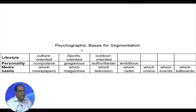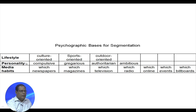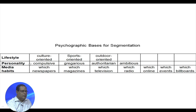We come to the psychographic basis for segmentation. There are three types: lifestyle, personality, and media habits. Lifestyle could be culture-oriented, sports-oriented, or outdoor-oriented. Personality could be compulsive, gregarious, authoritarian, or ambitious. Media habits cover which newspapers, magazines, television channels, radio stations, online platforms, events, and billboards the person engages with. These three psychographic bases can be used for segmenting markets.